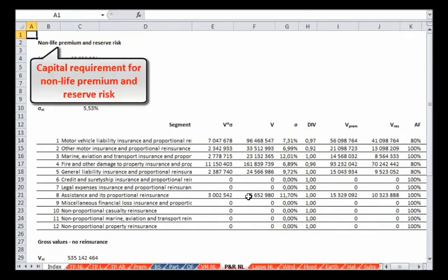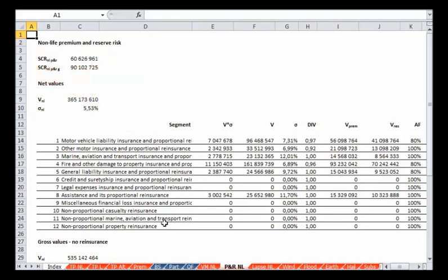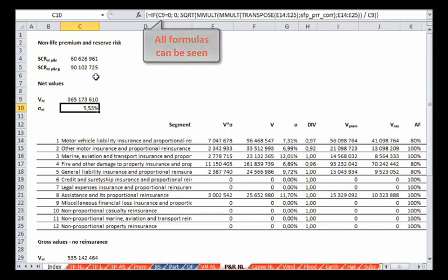The next example is a non-life premium and reserve risk, where calculations for each segment are first held to produce the overall volume measure, the standard deviation, and the final SCR.